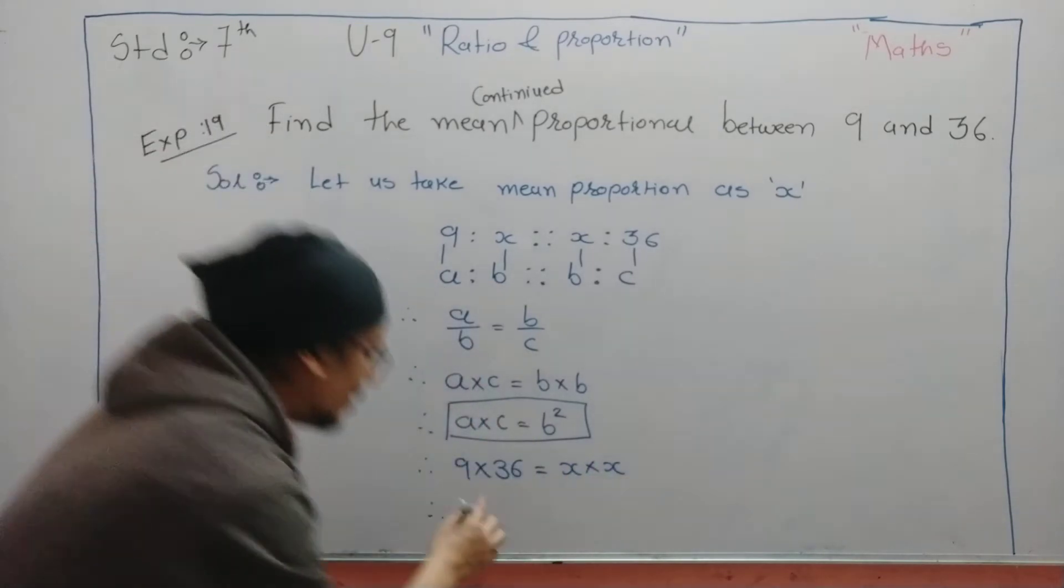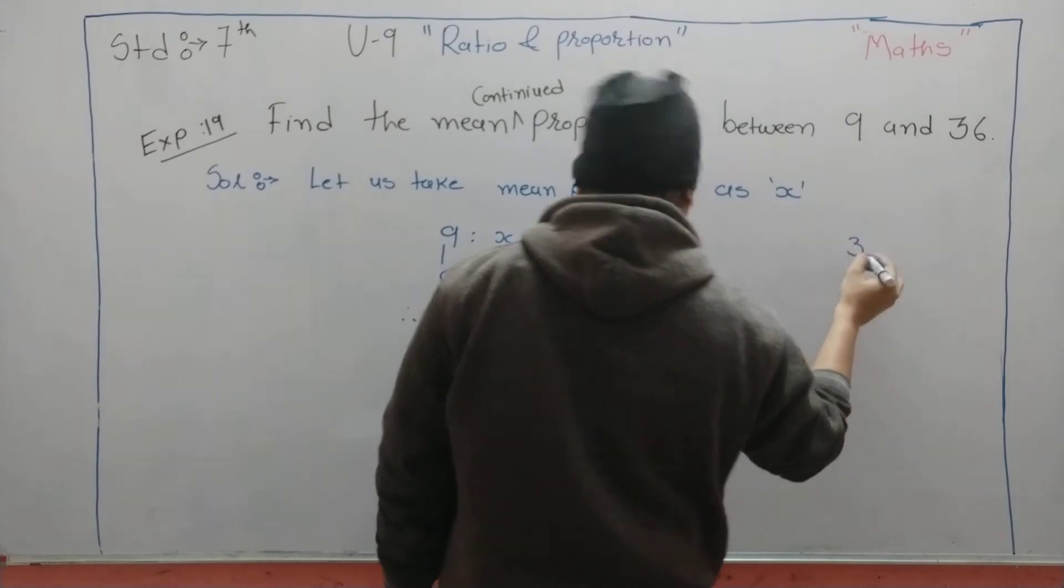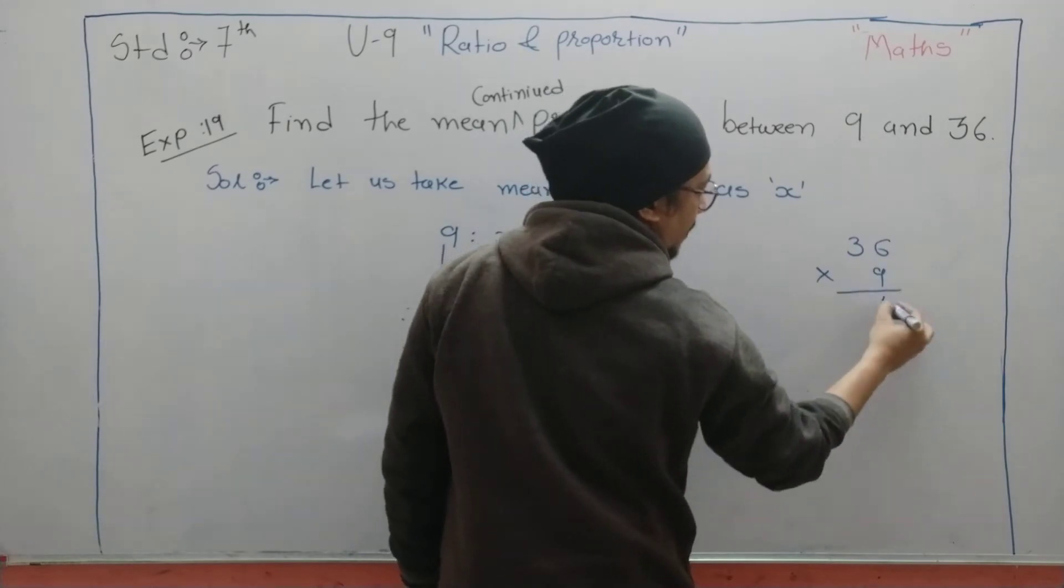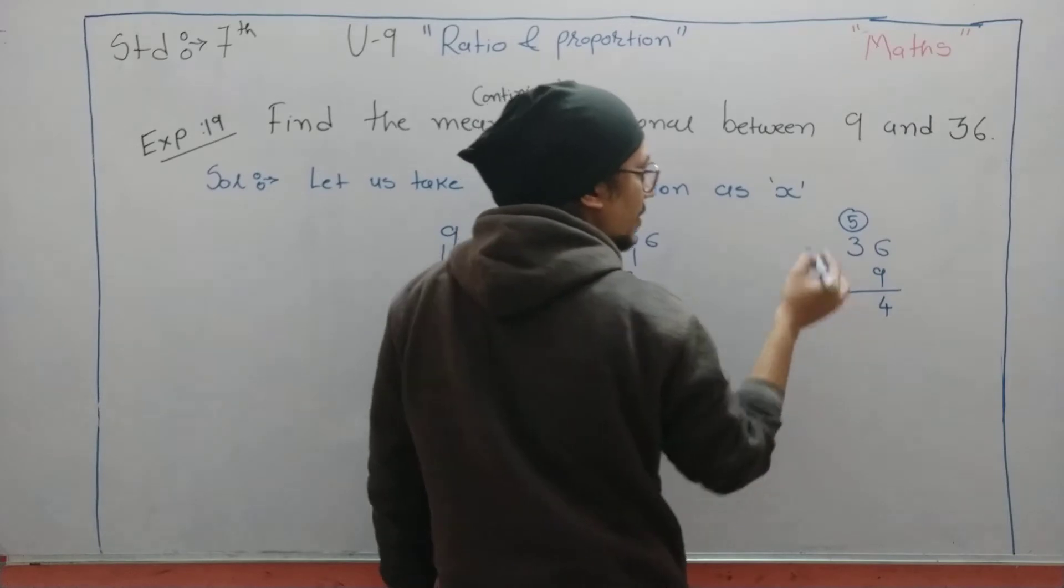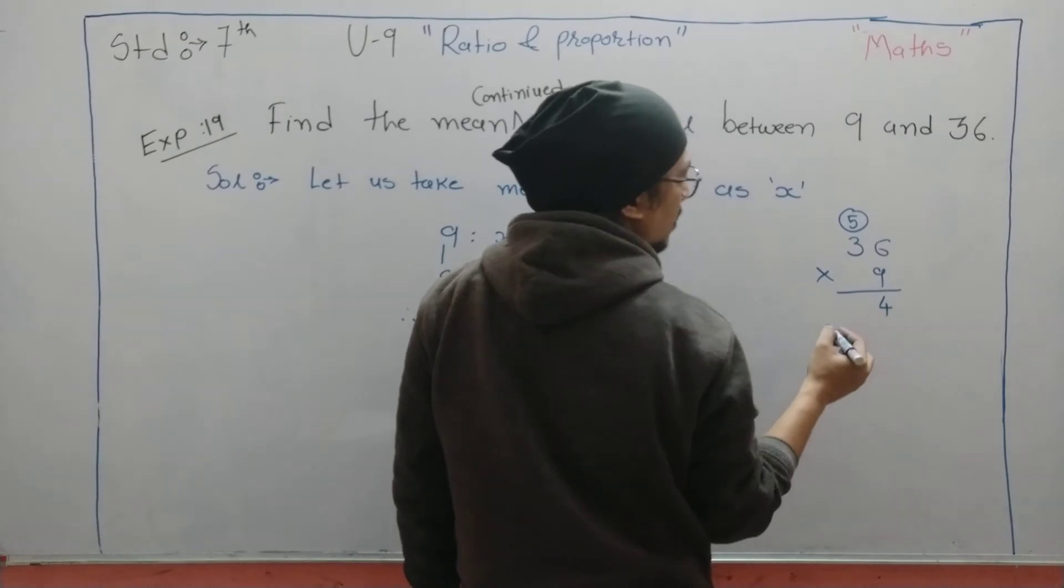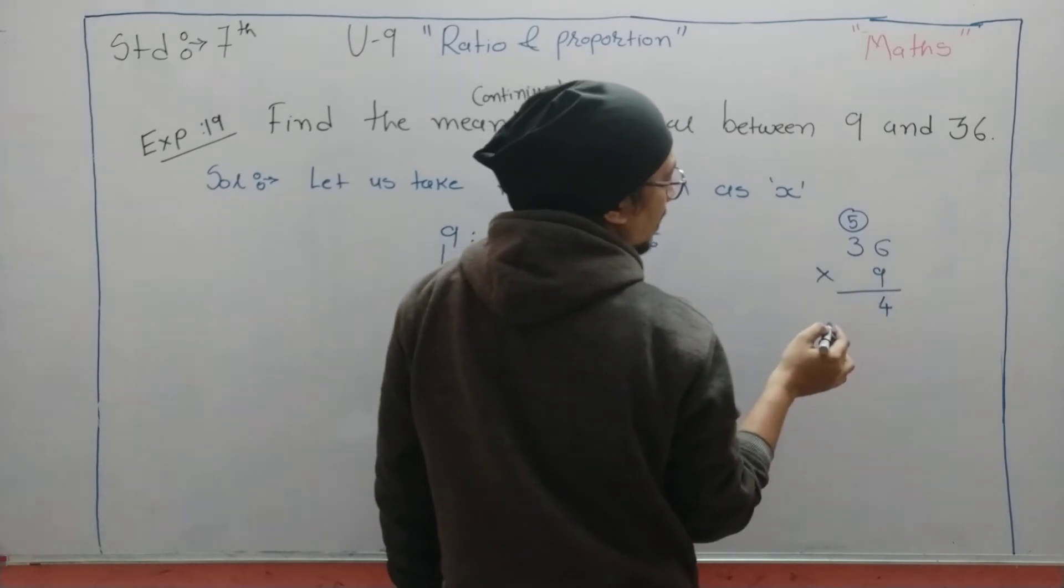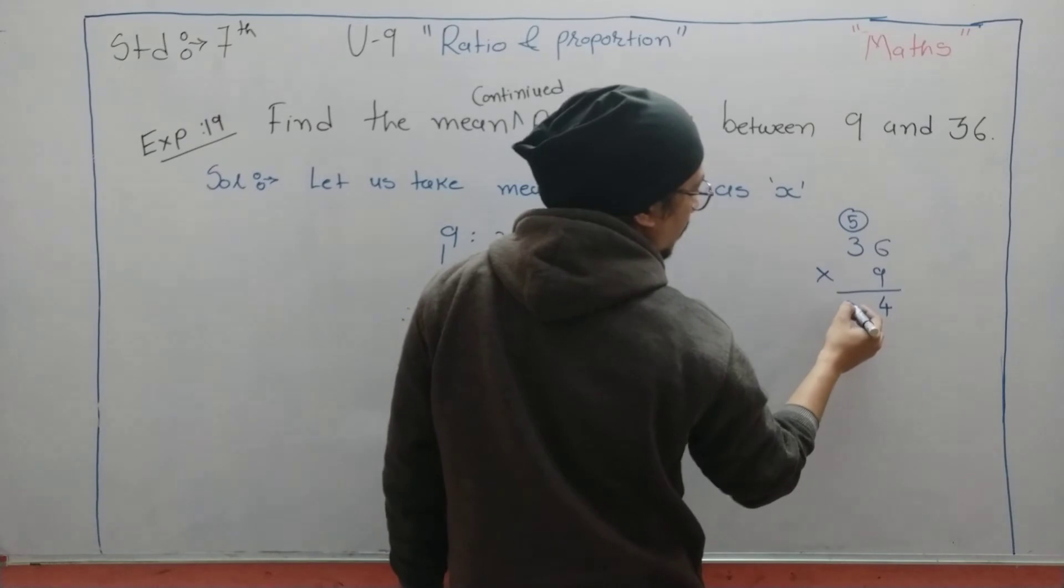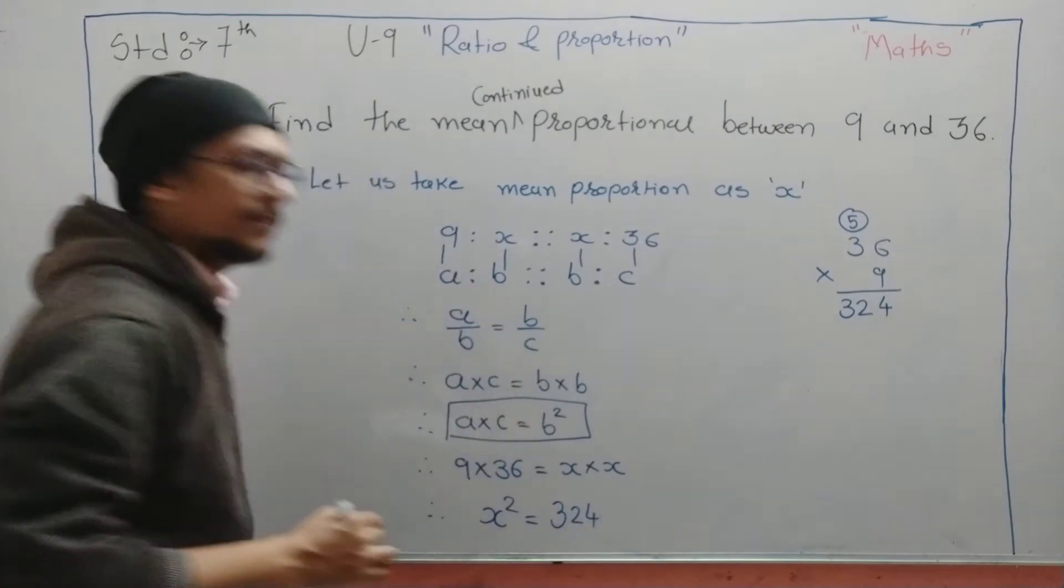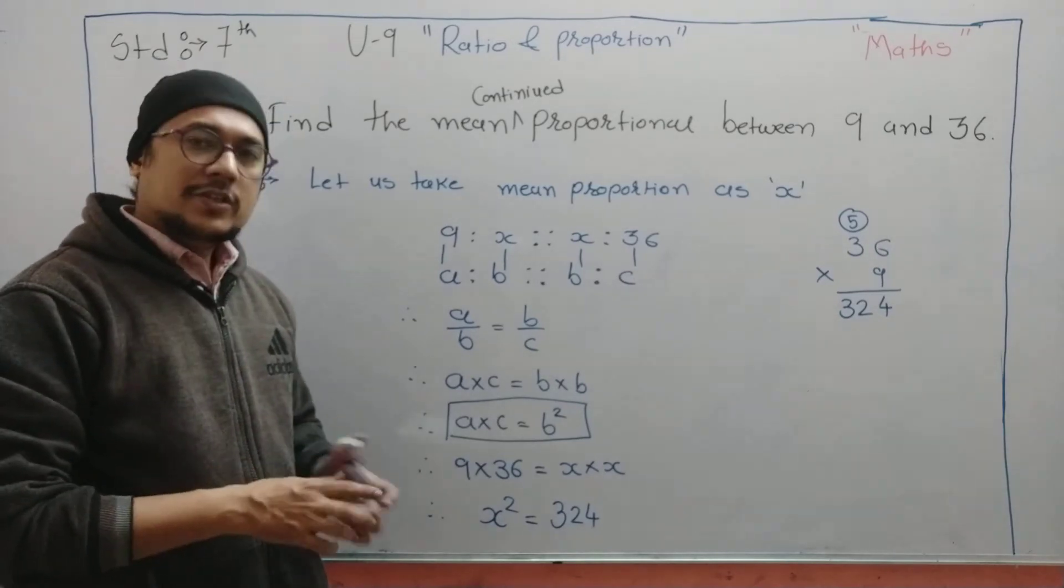It will become 9 into 36 is equal to x into x. We are changing the side, so it will become x square in the left side, 36 into 9. 9 times 9 is 54, remainder will be 5. 9 times 27 plus 5 is 32. 9 times 54, remainder will be 5. 9 times 27 is 32.